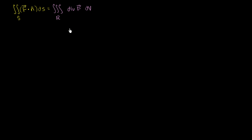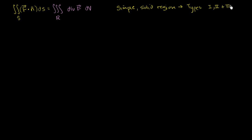We're summing up each little differential cube of volume. We're going to make an assumption: we're dealing with a simple solid region. What this means more formally is that the region can be a type 1, type 2, and type 3 region — it is all three. A lot of basic shapes like a sphere or a cylinder fall into this category. And for situations that aren't simple solid regions, you can break them up into simple solid regions. But let's just prove it for this case.